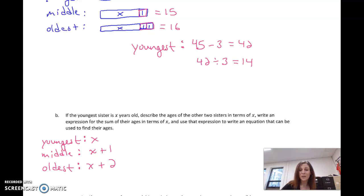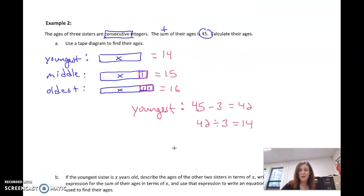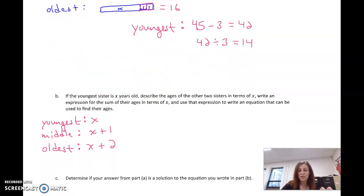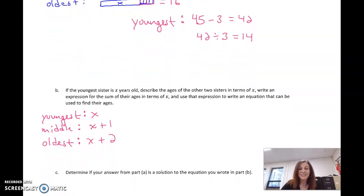Now, we also, when we write this equation, we want to keep in mind that the sum of their ages. So we're going to use these three expressions and set it equal to 45 because that's the sum of their ages. Sum means add. So I'm going to take X here and I'm going to add it to X plus 1 because that's the middle child. And then I'm going to add that to the oldest child, X plus 2. And all together, that has to equal 45. This expression equals this expression.